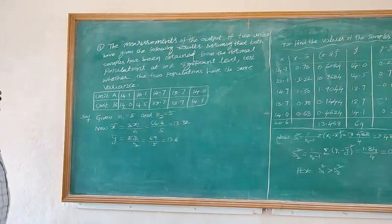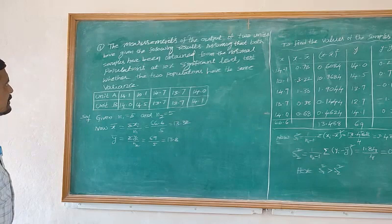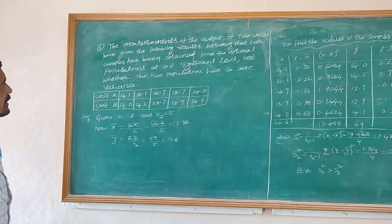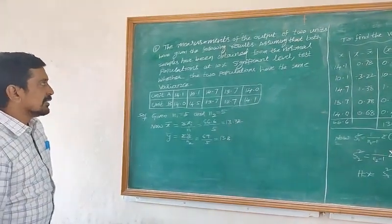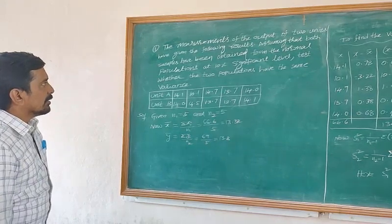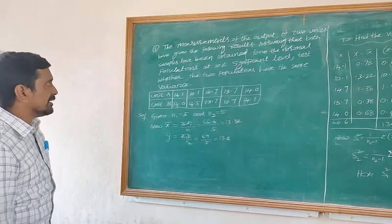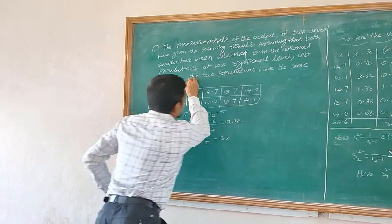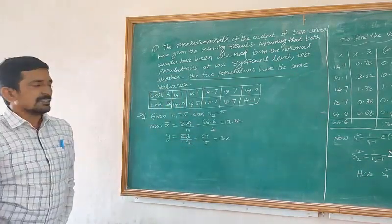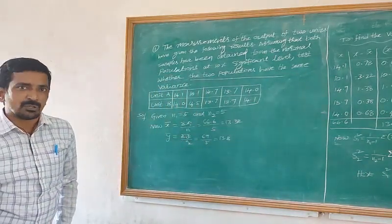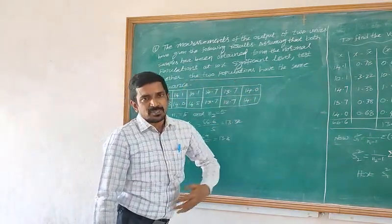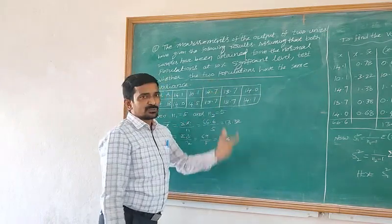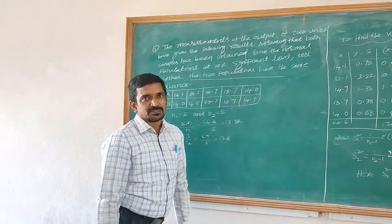Problem: The measurements of the output of two units have given the following results. Assuming that both samples have been obtained from normal populations, test at 10% significance level whether the two populations have the same variance.